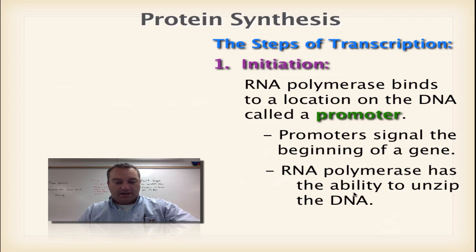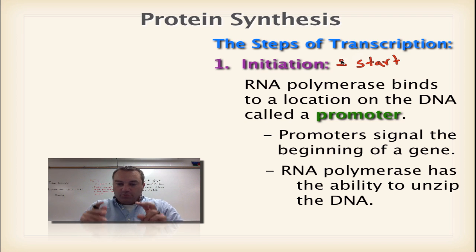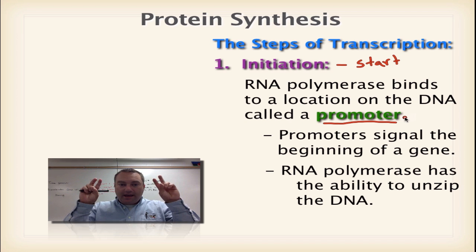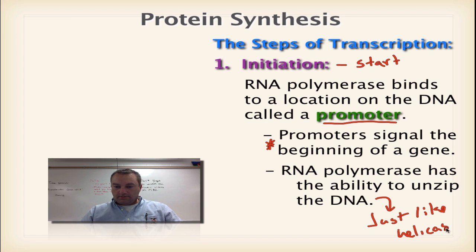The word initiation simply means start. We have to start transcribing the gene — RNA polymerase is going to unzip it and copy one side or the other. Remember, we copy the antisense strand. It's going to start at a DNA sequence called the promoter. The promoter is like a flashing signal on an airport runway or a Broadway marquee, basically saying 'hey, start here.' Promoters signal the beginning of the gene, and RNA polymerase can unzip it just like helicase.